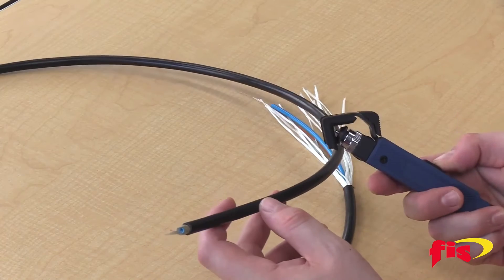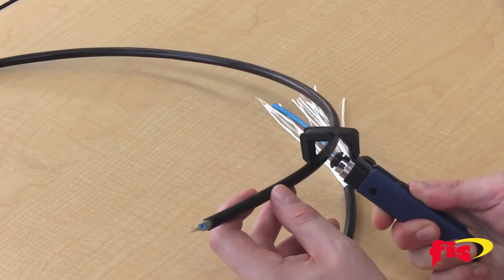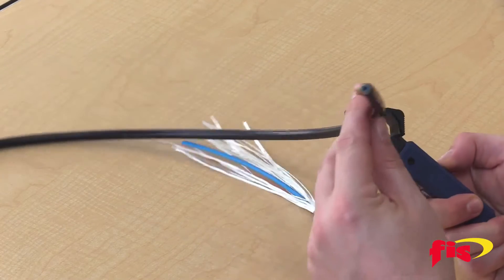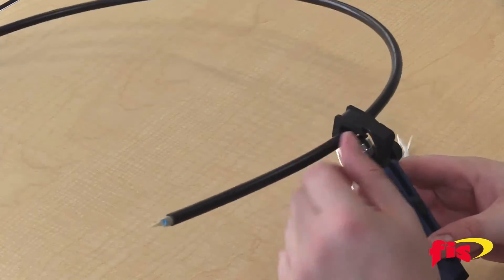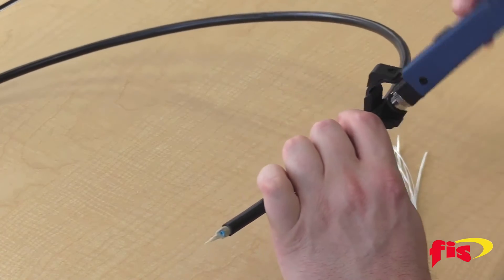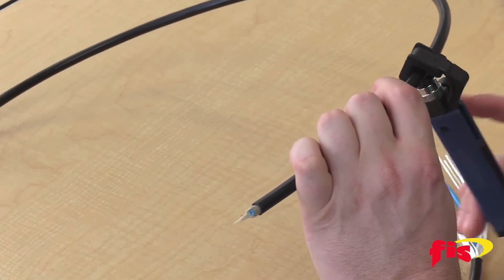We're going to do the circular cut so we put the tool on the cable like so. Make sure you get it firmly in the middle there and now we're just going to go around slowly and straight.